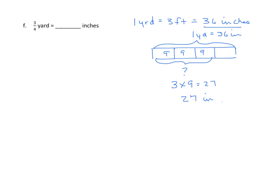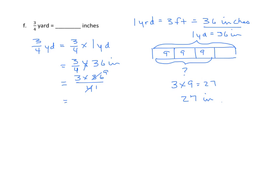Mathematically, three-fourths of a yard equals three-fourths times one yard. Every yard is thirty-six inches, so three-fourths times thirty-six inches. We solve three times thirty-six over four. Both thirty-six and four are divisible by four, and the answer is twenty-seven inches.